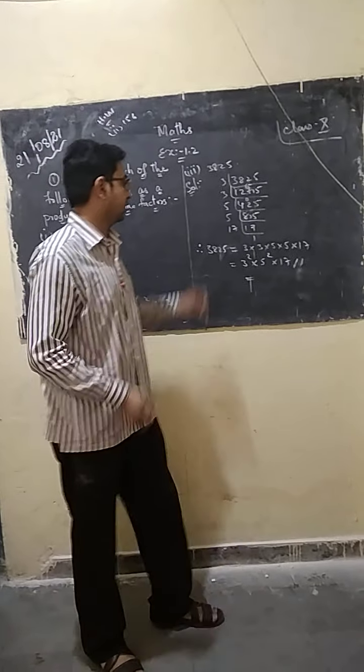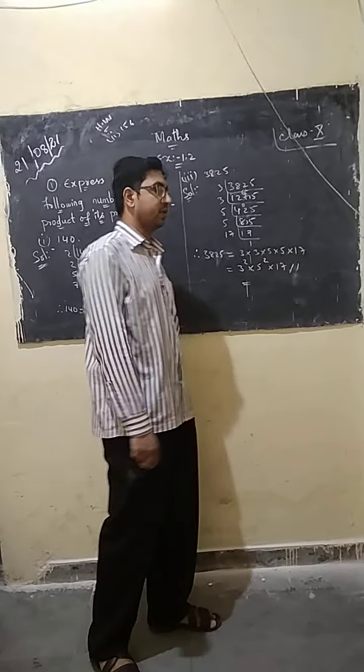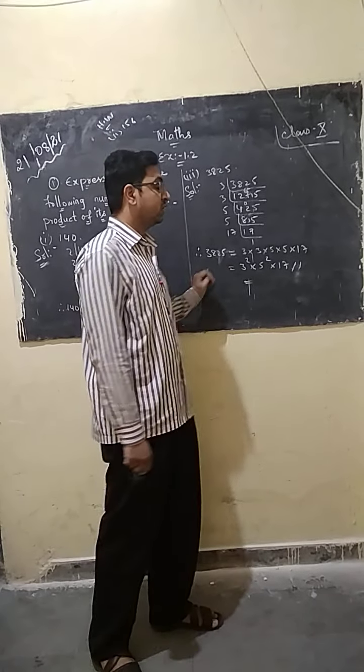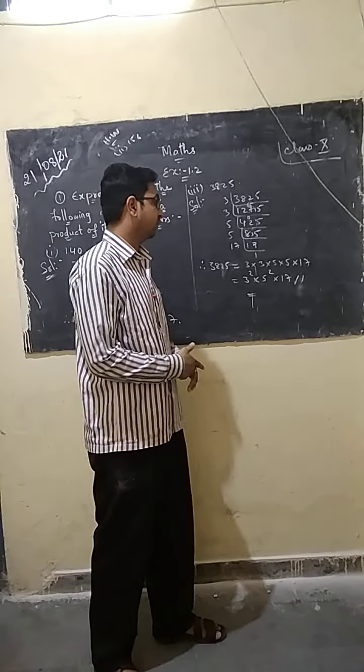5 times 5 is 25, and then 17 is remaining. So what are the factors of 3825? They are 3 into 3 into 5 into 5 into 17. These are the factors of 3825, or in other words, 3825 equals 3 squared into 5 squared into 17.